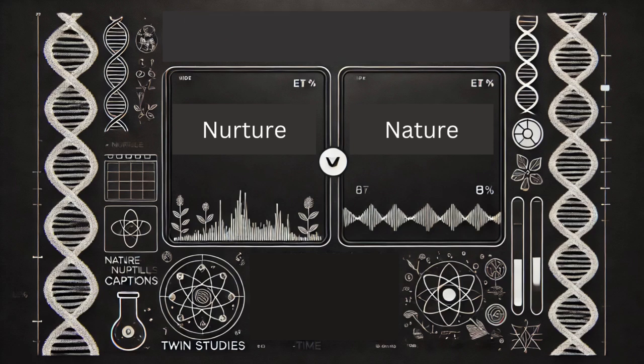70%? So what you're saying is, even if you give identical twins totally different upbringings, their genes are still a major driving force in who they become. That's what this research suggests. But of course, it's never as simple as just nature or nurture. It's how those two forces interact that really shapes us.